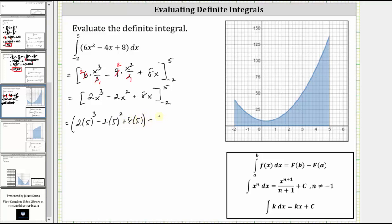And then we have minus, and now we substitute negative 2 for x, which gives us 2 times the cube of negative 2, minus 2 times the square of negative 2, plus 8 times negative 2.